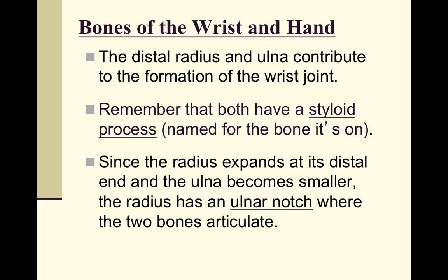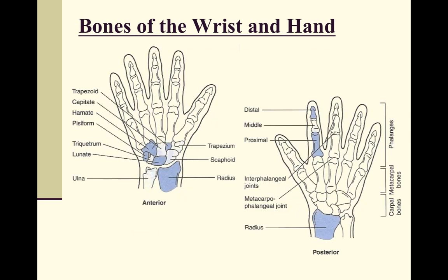Just like at the elbow, when we get down to the wrist, instead of there being a radial notch on the ulna, there is an ulnar notch on the radius. This is because the radius expands as it approaches the wrist — it becomes larger — while the ulna becomes much smaller, so there is a notch where the two articulate.